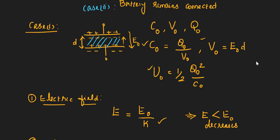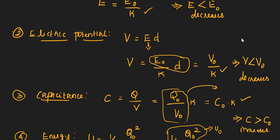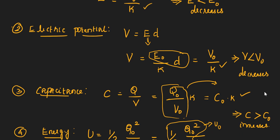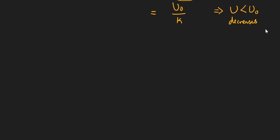In case 1 we have seen electric field decreases after inserting the dielectric. Electric potential also decreases. Charge remains constant, capacitance increases, energy decreases.